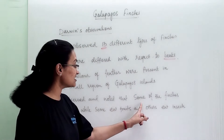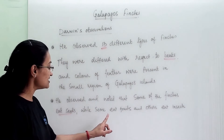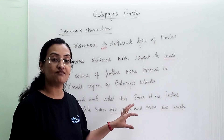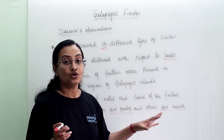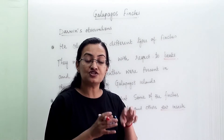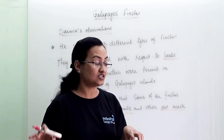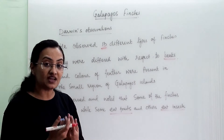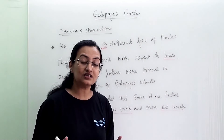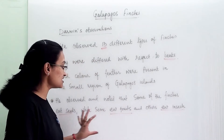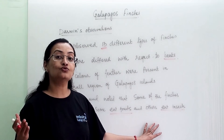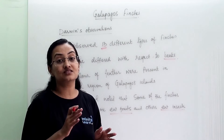He observed and noted that some of the finches eat seeds, while some eat fruits, and others eat insects. As we discussed about adaptation, these finches have adapted features based on their lifestyle. The beak needed by finches eating insects is entirely different from those eating fruit or seeds. Seeds have a very hard outer coating, fruits are easy to eat, and to eat insects you have to locate and catch them.